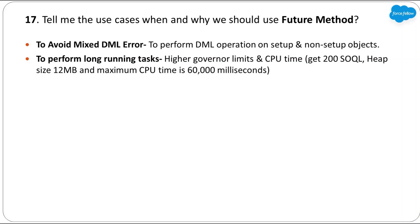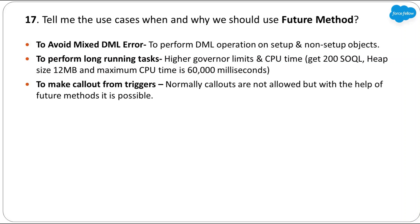With asynchronous Apex we also get higher governor limits — normally we have 100 SOQL per transaction, but with asynchronous Apex we can run 200 SOQL queries, and heap size is 12 MB with higher CPU time. So if you have a long-running task requiring more SOQL or heap size, you can use future methods. The third use case is making callouts from triggers — we can't do callouts directly from Apex triggers, but with future methods we can write the callout code in the future method and call it from the trigger.